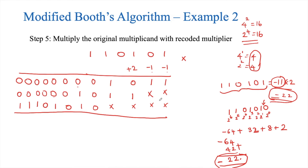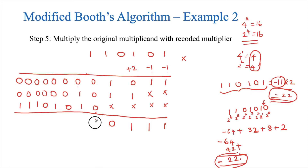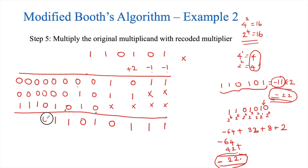Now we add the partial products as per the procedure. Adding column by column: 1 plus 1 is 0 with a carry; carry plus 1 plus 1 gives 0 with a carry; continuing, the result bits are 1 1 1 0 1 1 0 1 1 1. This final bit is the sign bit.